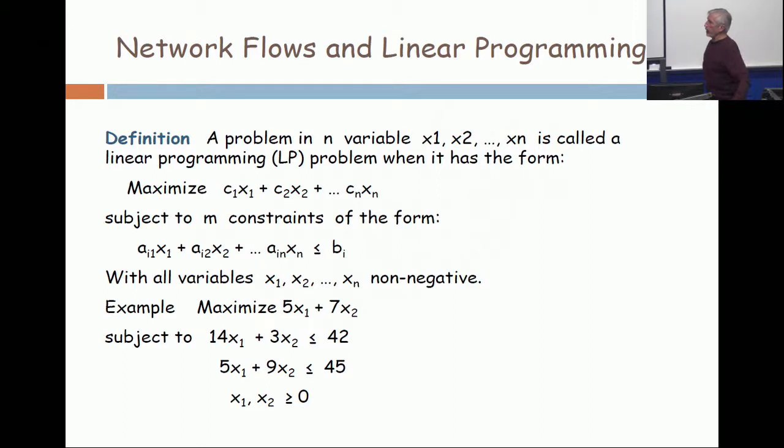Maximize a linear function of your variables, so c1, c2, up to cn are real constants, positive, negative, or zero. Subject to constraints, all the constraints of the form: a linear combination of the x's is less than or equal to bi, with all the variables non-negative.